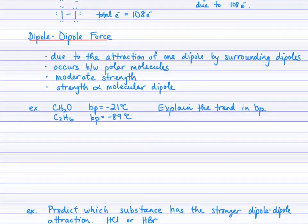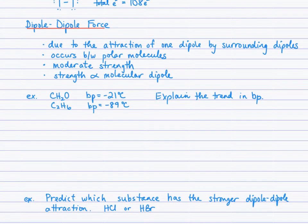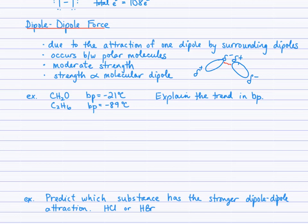Next force: dipole-dipole. Here we have an attraction between the opposite charges of dipoles of polar molecules. If this is the partially negative end and we have the partially positive end of this molecule, then a second polar molecule is going to orient its partially positive end nearby. We get an electrostatic attraction between the partially negative and partially positive ends of adjacent molecules — a dipole-dipole attraction. Molecules must be polar to experience this. It is stronger than London forces, but not as strong as a hydrogen bond.